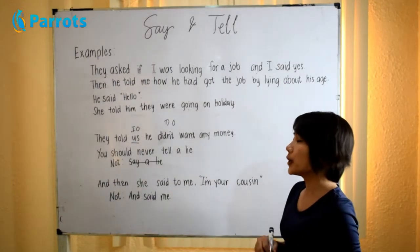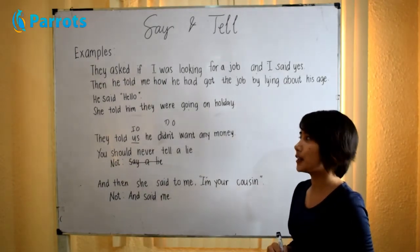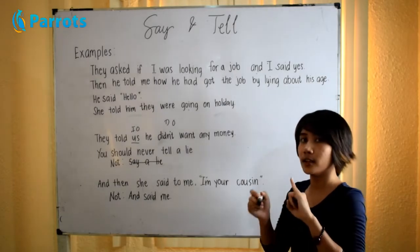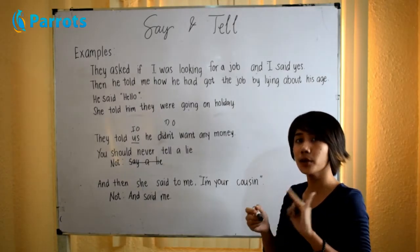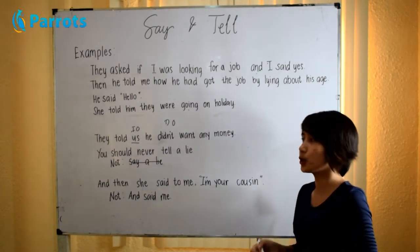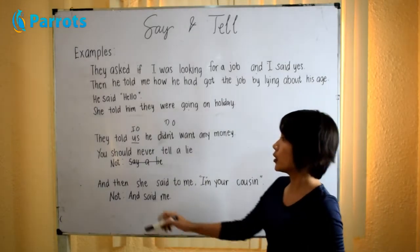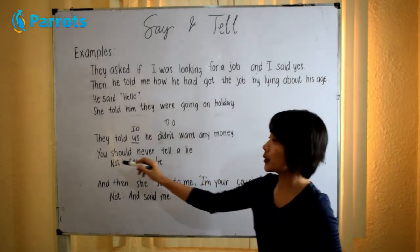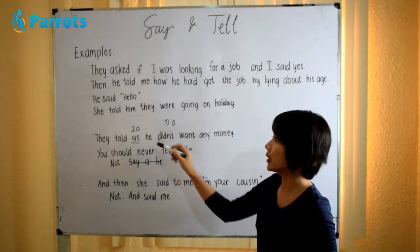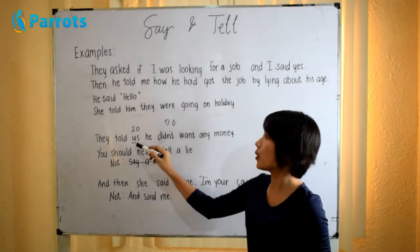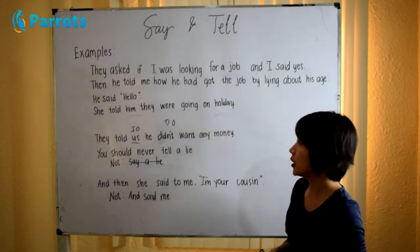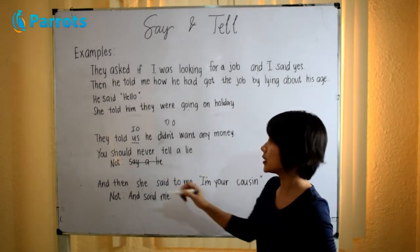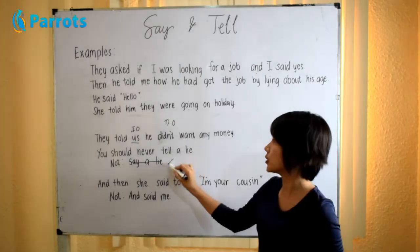However, we use tell without an indirect object with words such as the truth, a joke, a lie, and a story. For example, you should never tell a lie. In this sentence, there is no indirect object — no us. So we say tell a lie, not say a lie, as that would be wrong.